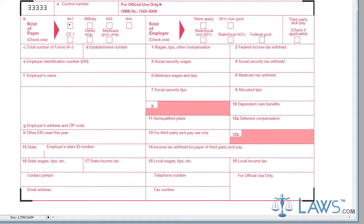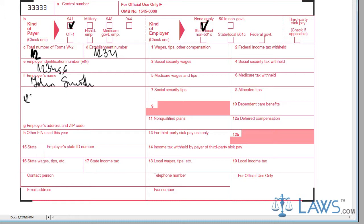First, you must start by indicating the kind of payer and the kind of employer filing the Form W-3 in Box B. Next, list the total number of W-2s covered in Box C, along with the establishment number, employer identification number, and employer's name and contact information in Boxes C through G on the left section of the form.